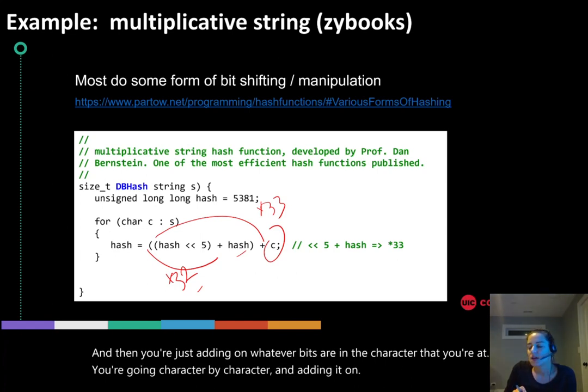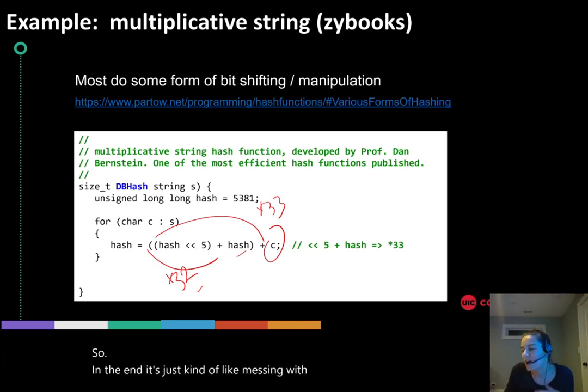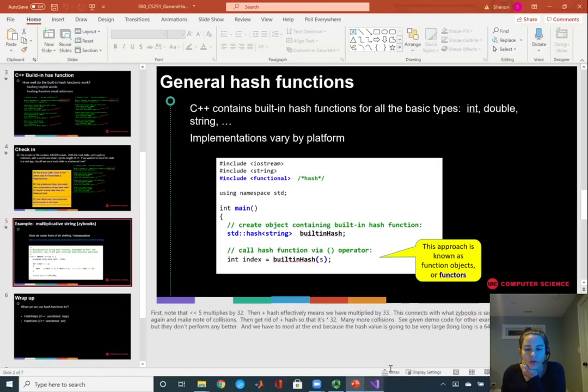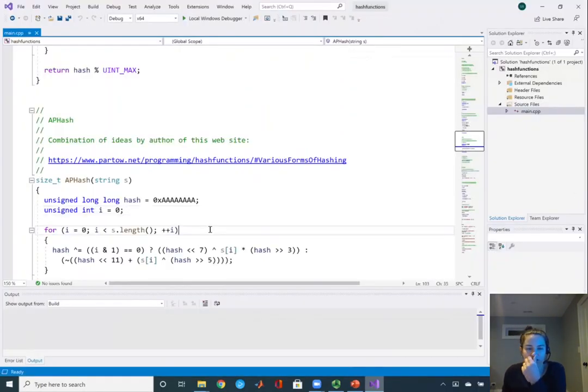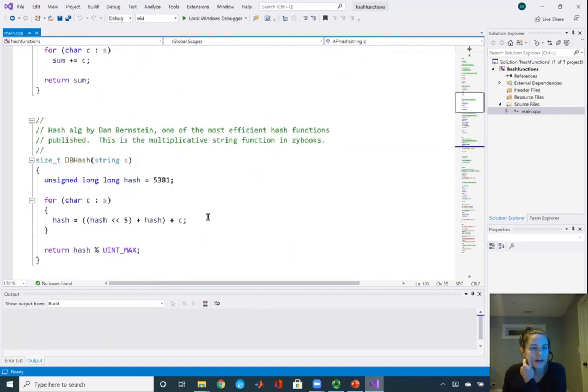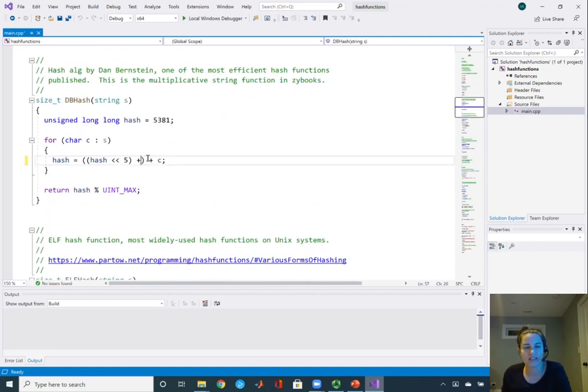In the end it's just kind of messing with the bits in this pattern and it ends up doing a pretty good job. But what I wanted to show you is that it is important that you're shifting by that 33. If we go back to this here and we take this out and just shift by 32, just multiply by 32, just shift by 5, and run it...